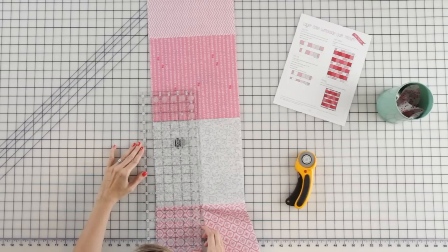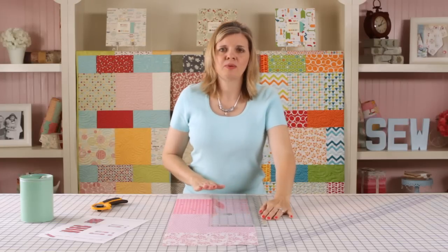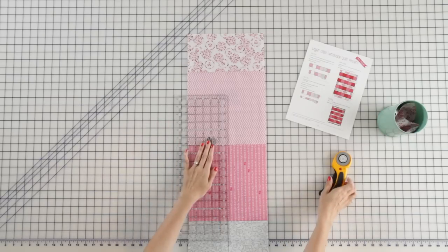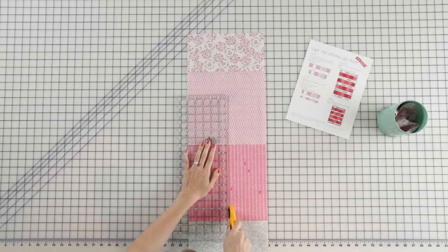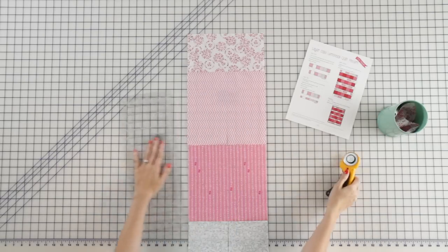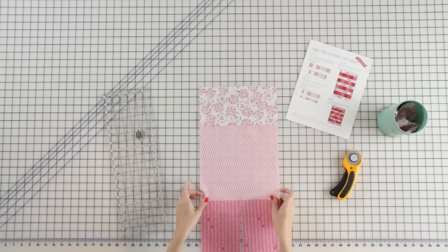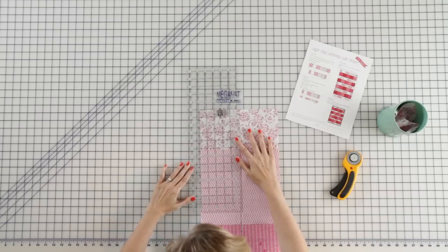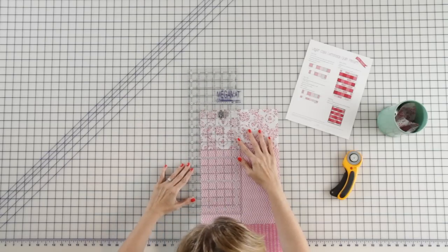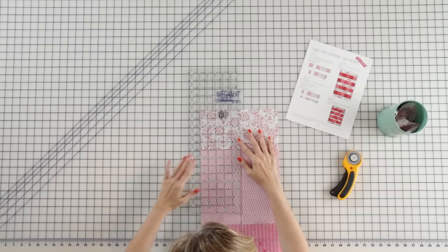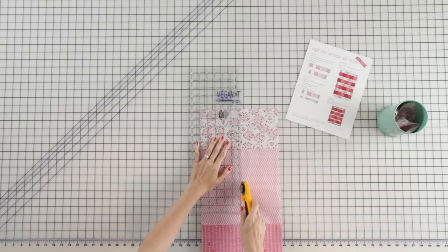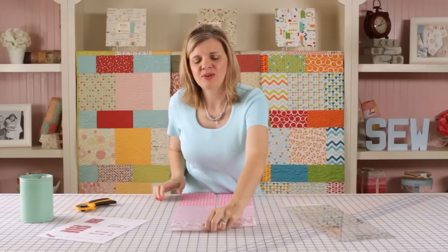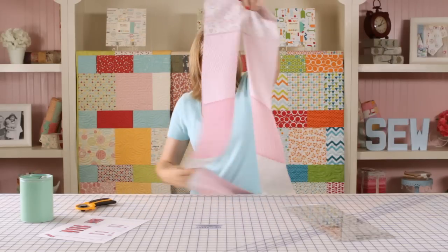So you want to line up again, line up your lines. You want to go really slow because you want to measure twice, cut once. Let's make our last cut and there you go. You've turned your light strip into two strips.